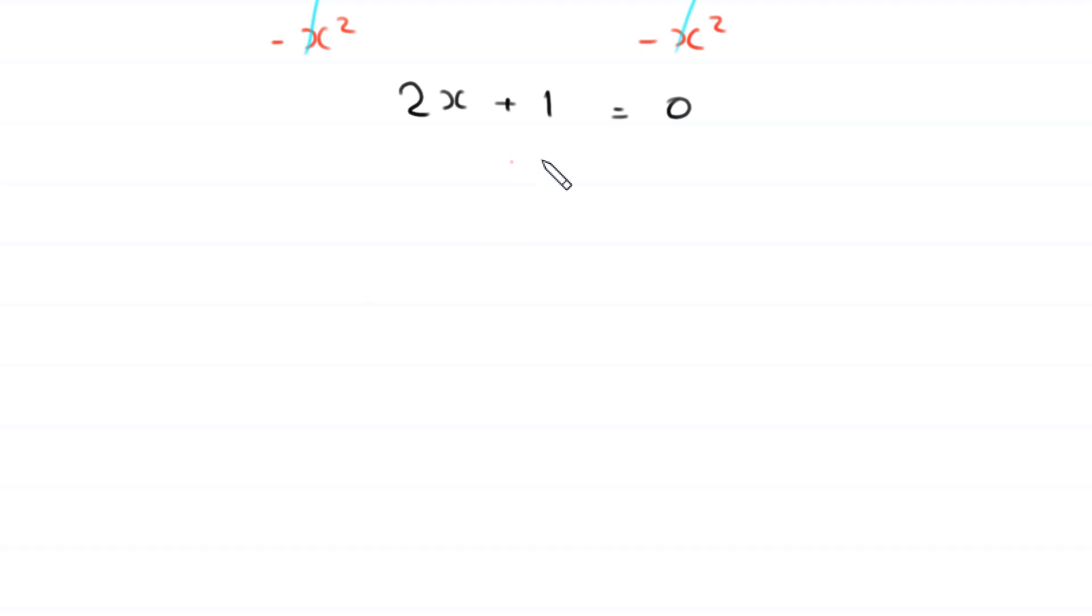Now, we subtract 1 from both sides. So, this 1 gets cancelled with this negative 1, and here we are left with 2x equals 0 minus 1, which is negative 1.